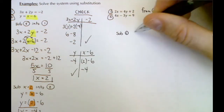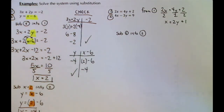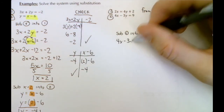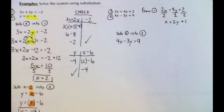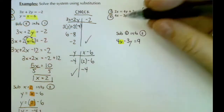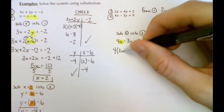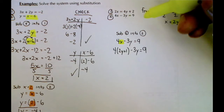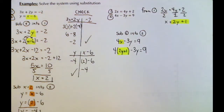Now we substitute equation 1 into equation 2. Equation 2 is 4x - 3y = 9, and we replace x with what x equals — 2y + 1. So we rewrite it as 4(2y + 1) - 3y = 9. The only part we changed is that x is replaced with 2y + 1.